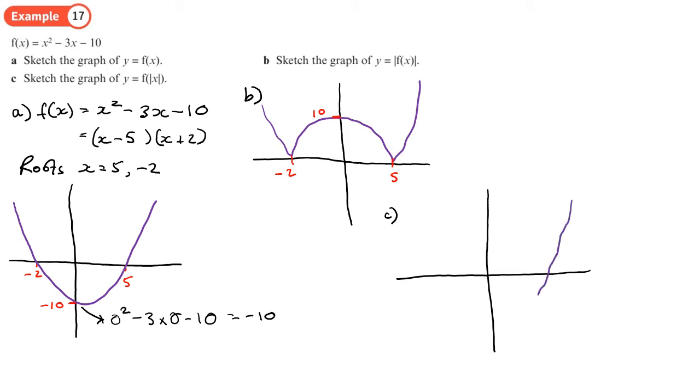So we're going to end up with a graph that sort of goes down like this. Now I know that the minimum is going to be over this side somewhere because the minimum is always halfway between these two values.